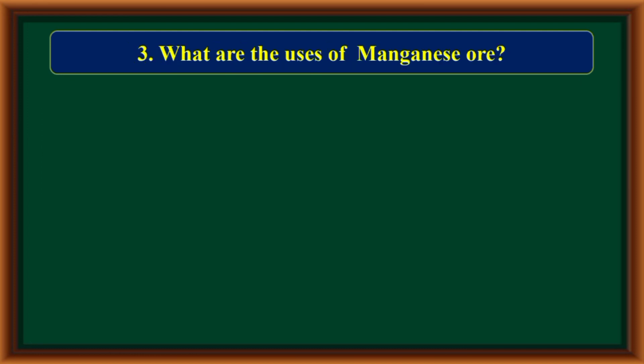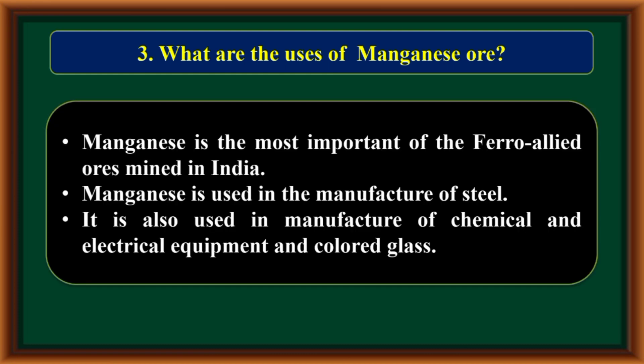What are the uses of manganese ore? Manganese is the most important of the ferro-alloy ores mined in India. It is used in the manufacture of steel. It is also used in the manufacture of chemicals, electrical equipment, and coloured glass.